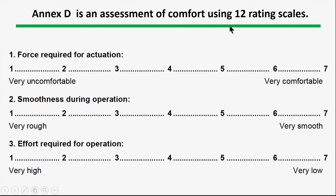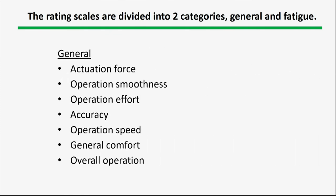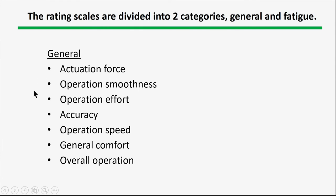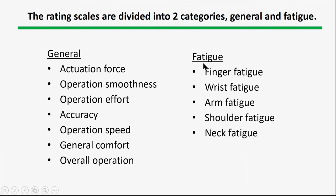Annex D talks about comfort. There are 12 scales of comfort used by this procedure. For example, you determine the force required for actuation on a scale from 1 (very uncomfortable) to 7 (very comfortable). There's also smoothness during operation and effort required. The scales are divided into two categories: general — which covers actuation force, smoothness, effort, accuracy, operation speed, general comfort, and overall operation — and fatigue-related scales asking which body part is fatigued: finger, wrist, arm, shoulder, or neck.